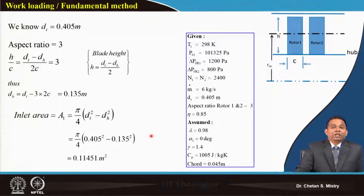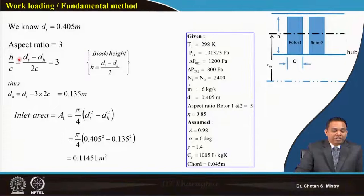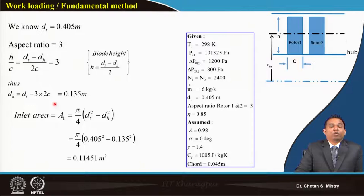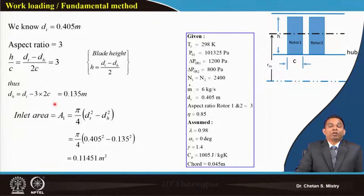Aspect ratio is defined as height-to-chord ratio. The blade height can be written as (D_tip − D_hub) / 2C. Since we know the aspect ratio, we can solve for the hub diameter, which comes out to 0.135 m. If the aspect ratio is not given, you can assume your radius ratio and proceed similarly. Use known parameters when available; otherwise make suitable assumptions.